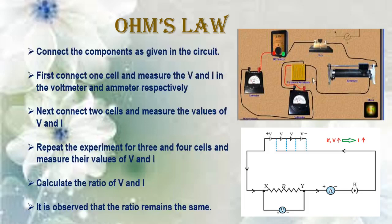You will observe that the potential difference is increasing as the number of cells increases, and you will also observe that as the potential difference increases, the current flowing through the circuit is also increasing. It is also observed that the ratio between V and I remains the same.